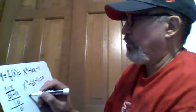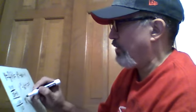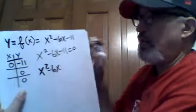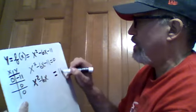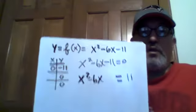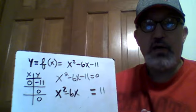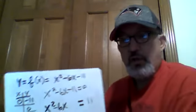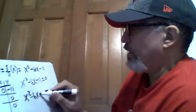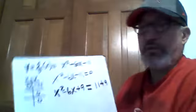So first, completing the square. Since a is one here, we only have the one preliminary step of putting the c on the other side by adding 11 to each side. And now we're ready to complete the square. We take half of the coefficient on the x term and square it. Half of negative six is negative three. Negative three squared is nine. We'll add nine to both sides.